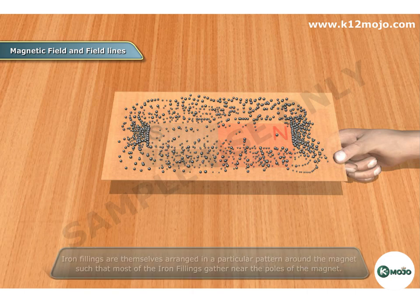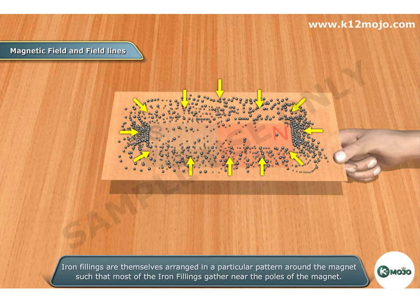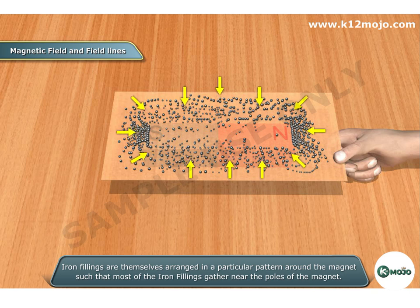Observation: The iron filings arrange themselves in a particular pattern around the magnet, such that most of the iron filings gather near the poles of the magnet.